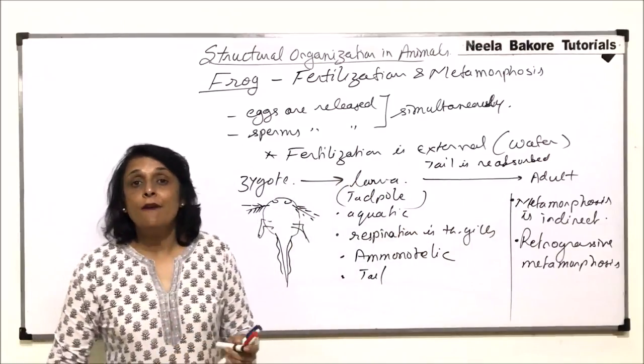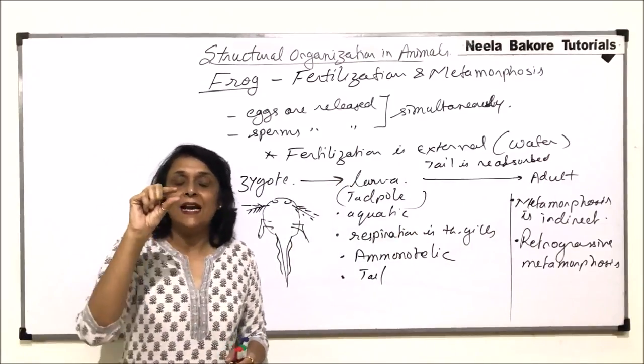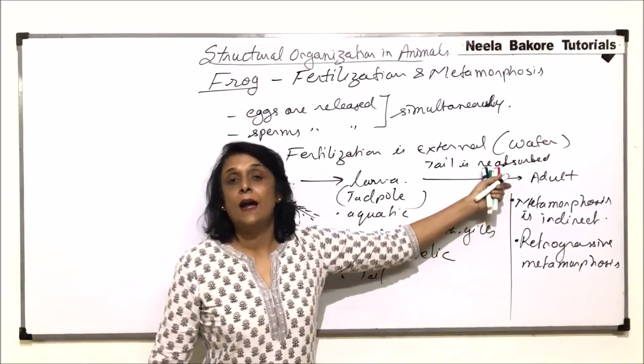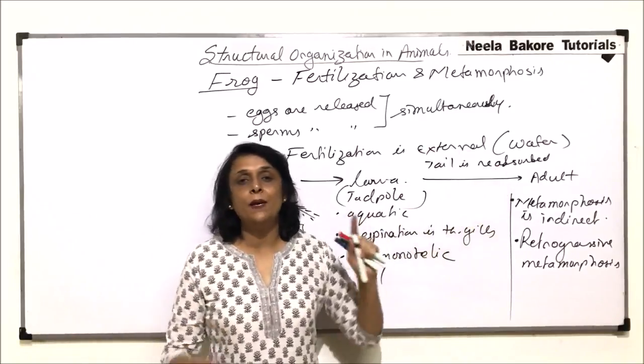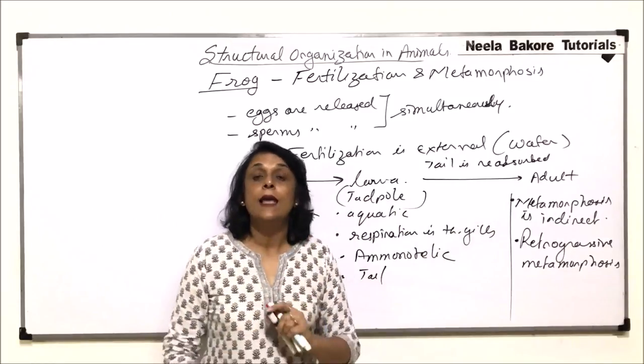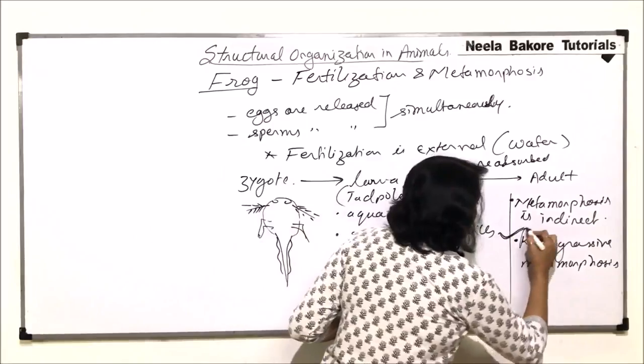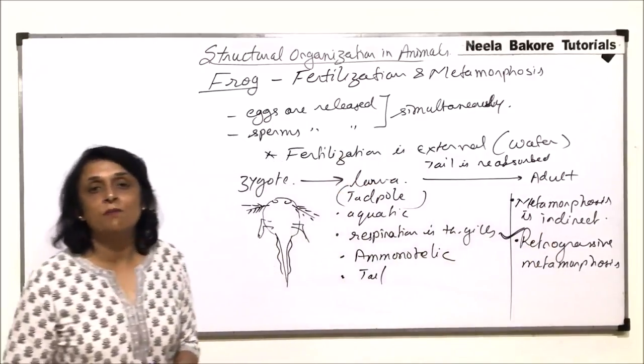And during this stage, we would find a frog where the tail is a very tiny structure. And slowly and gradually, as it grows towards the adult stage, all that complete structure, which is called tail, gets reabsorbed. And that is why it is called retrogressive metamorphosis.